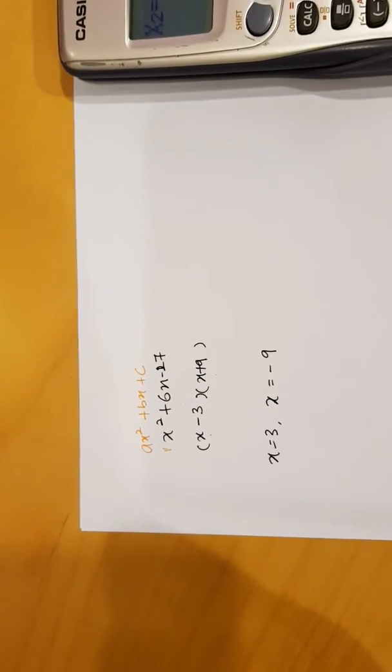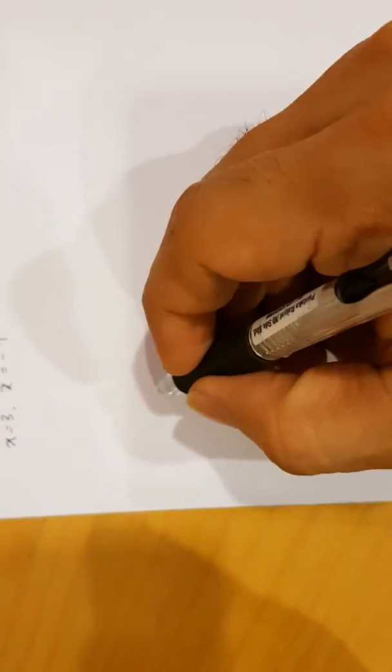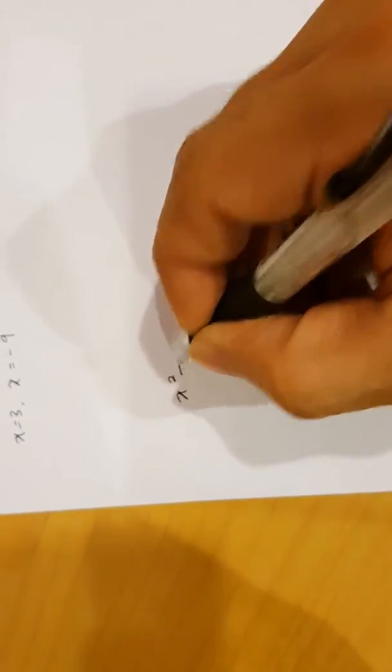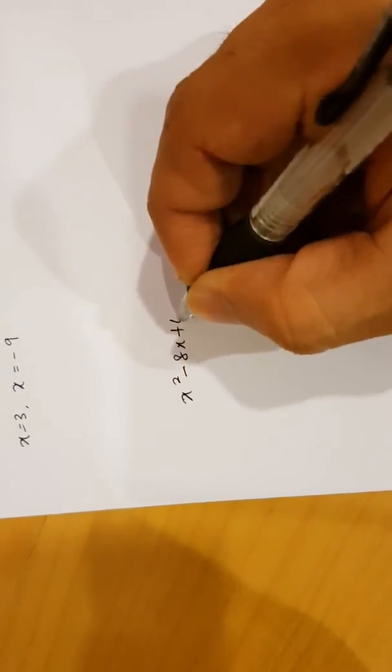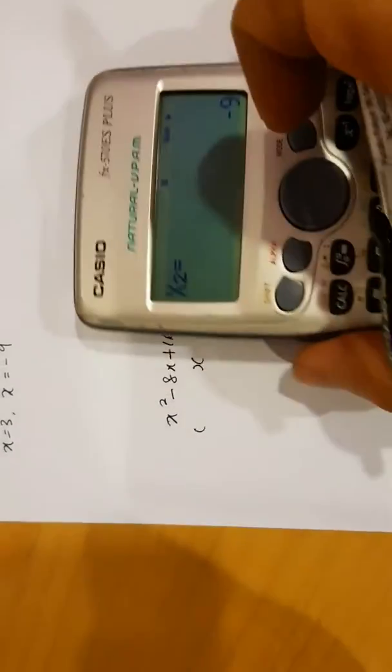Sometimes we have a different situation. Let's consider another situation. Let's say now we have to factorize this, X squared minus 8X plus 16. Again, you will get two brackets. Same method.